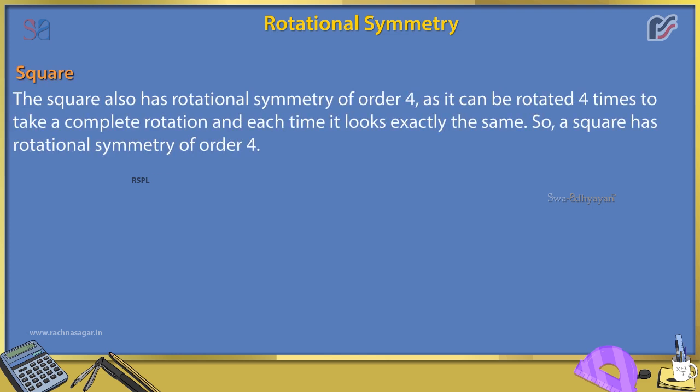Square. The square also has rotational symmetry of order 4, as it can be rotated 4 times to complete a full rotation and each time it looks exactly the same. So, a square has rotational symmetry of order 4.